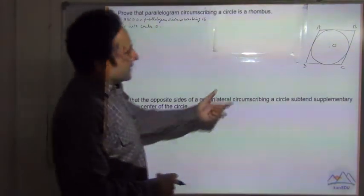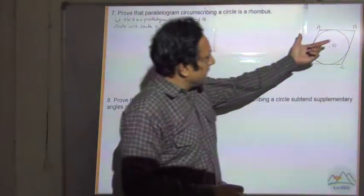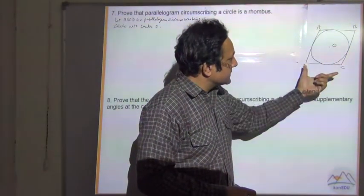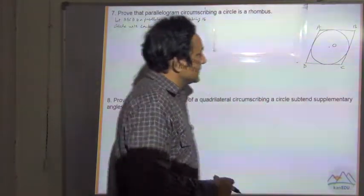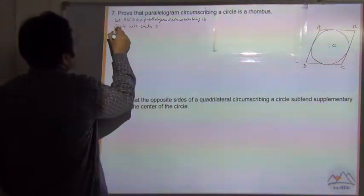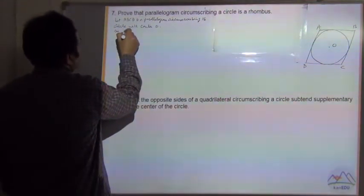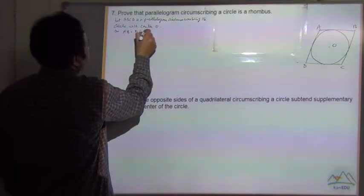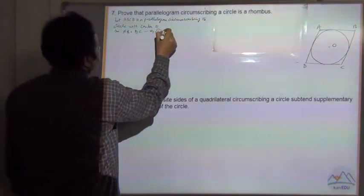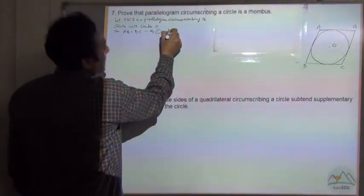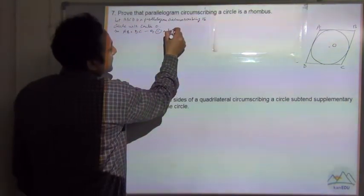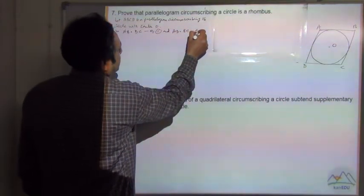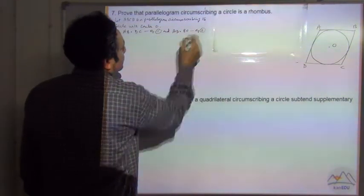Now, since it is a parallelogram ABCD, it means AB is equal to DC — say equation 1 — and AD is equal to BC — say equation 2.